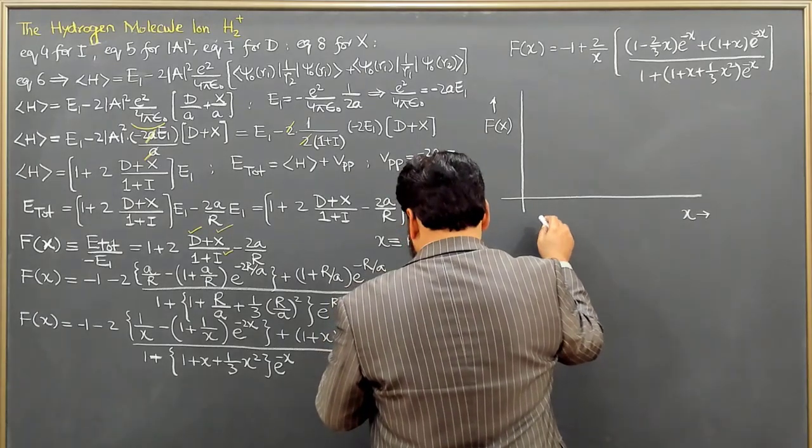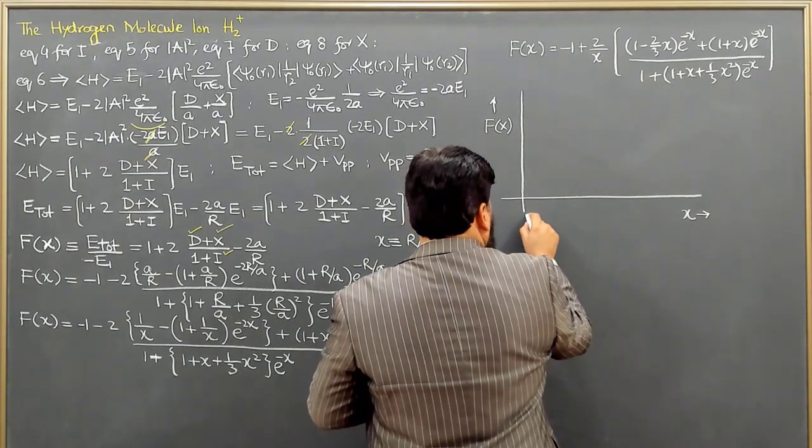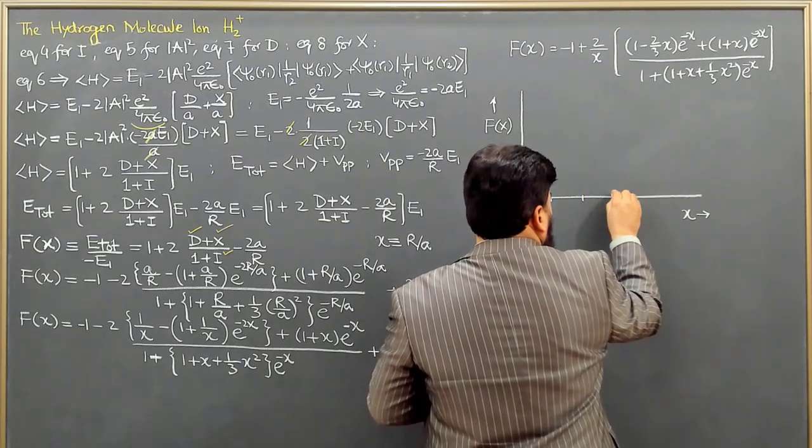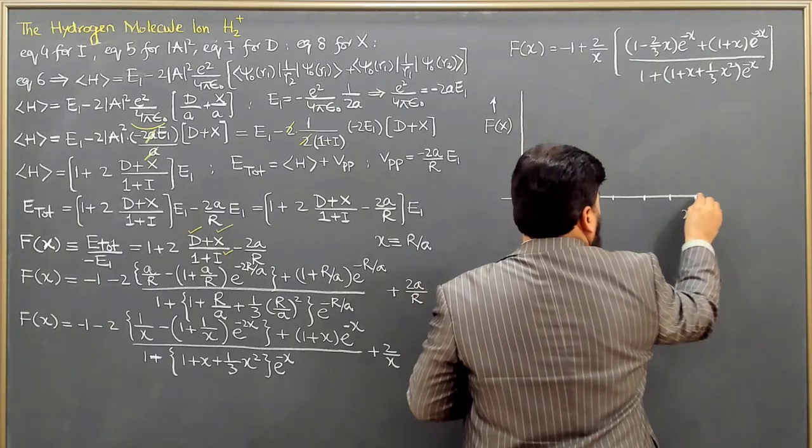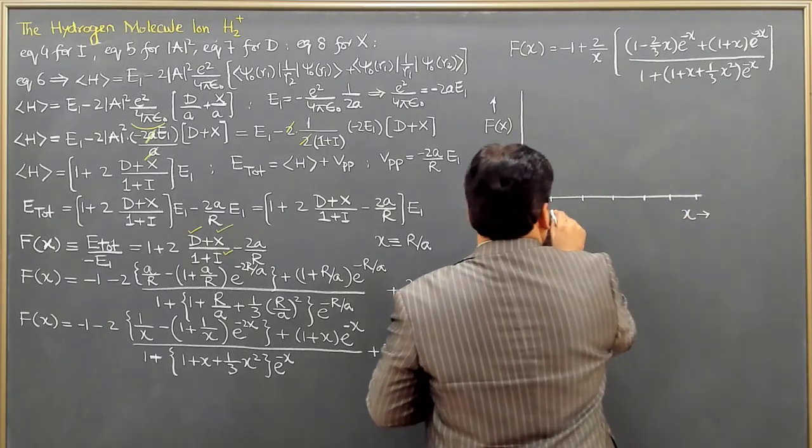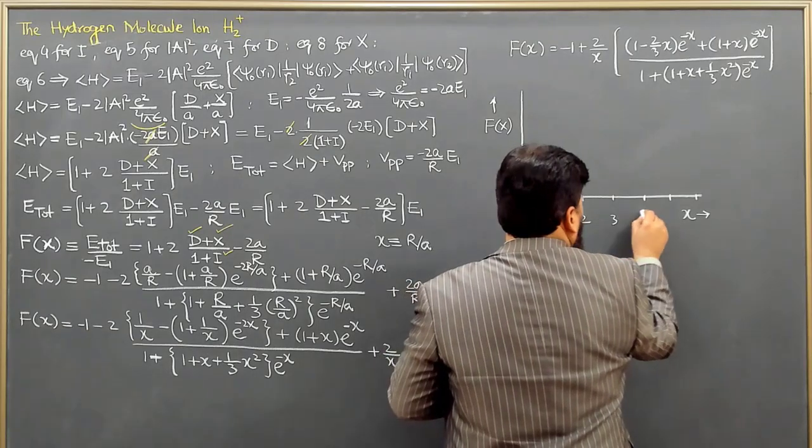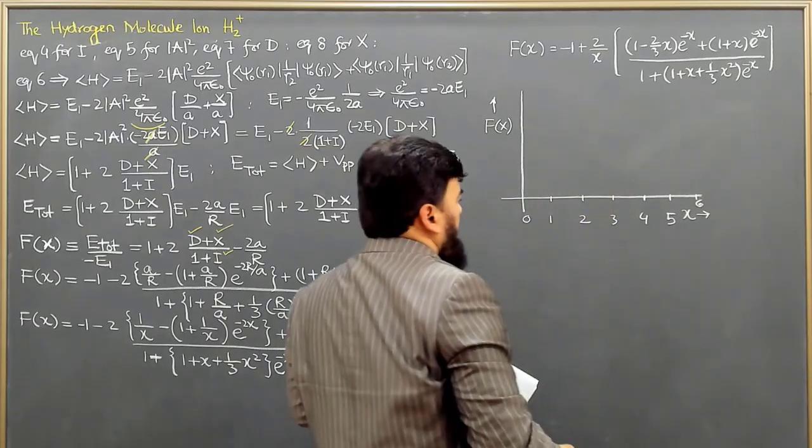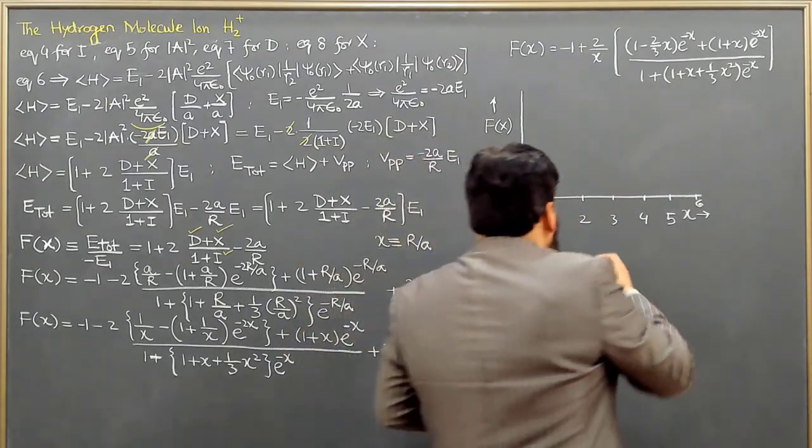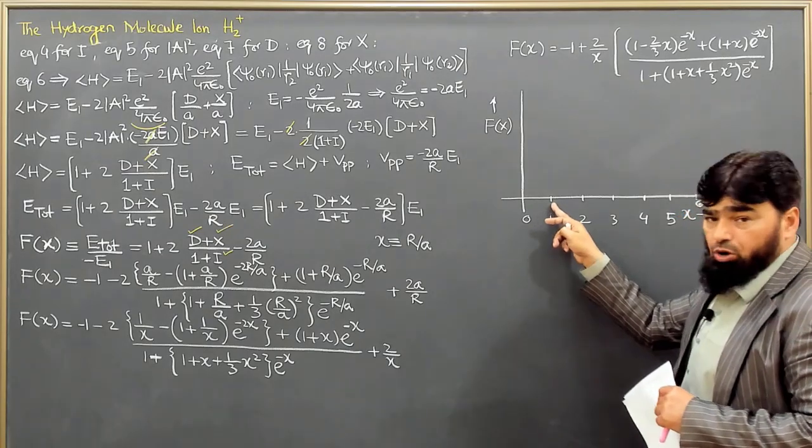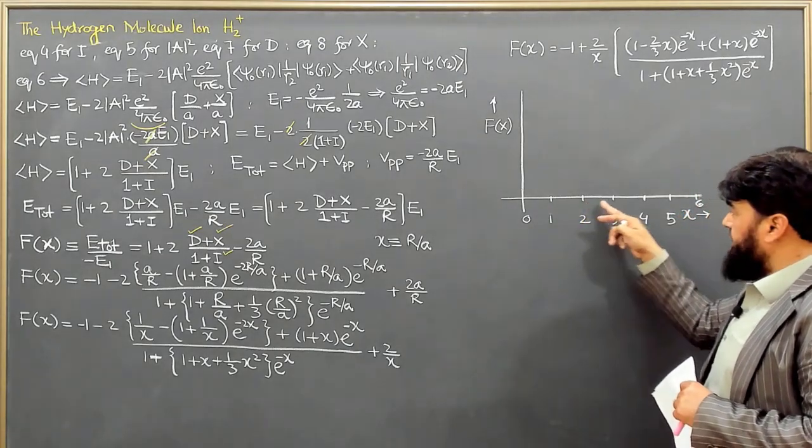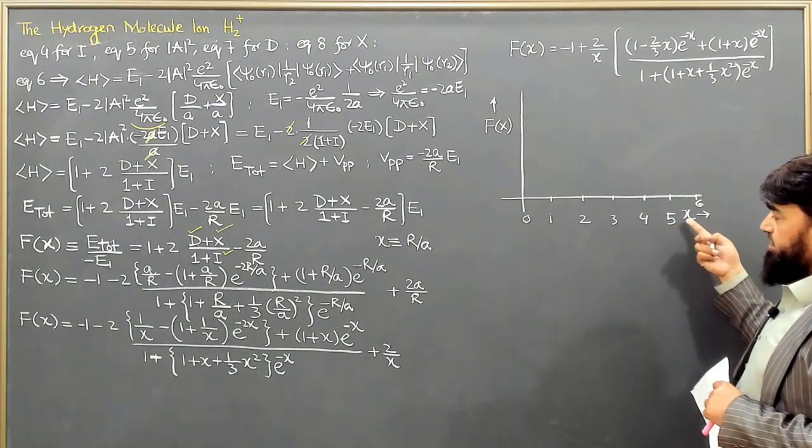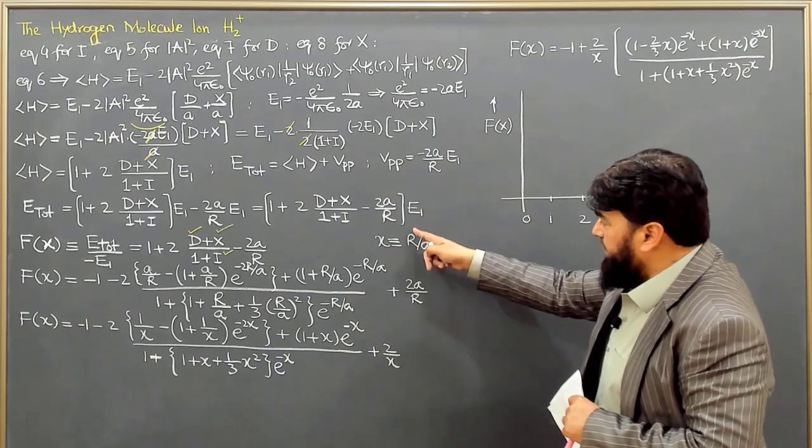From 0 here, and then 1, 2, 3, 4, 5, and 6. So we have 1, 2, 3, 4, 5, and 6 here. So what does it mean? It means 1 Bohr radius, 2 Bohr radius, 3, 4, and so on, because x is r over a.